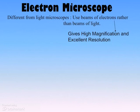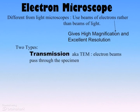Because of the physics of electrons and the physics of light, the difference between that — the beam of electrons — allows us to get really high magnification and really, really good resolution.